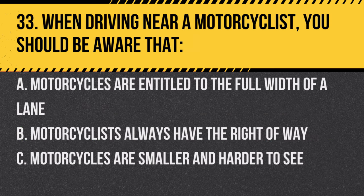Question 33. When driving near a motorcyclist, you should be aware that: a. Motorcycles are entitled to the full width of a lane. b. Motorcyclists always have the right of way. c. Motorcycles are smaller and harder to see. Answer: a. Motorcycles are entitled to the full width of a lane. This acknowledgement helps ensure their safety.